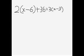Hi, I'm Bob and we're going to be solving this equation. First we use the distributive rule. So 2 times x minus 2 times 6, and then plus 36.